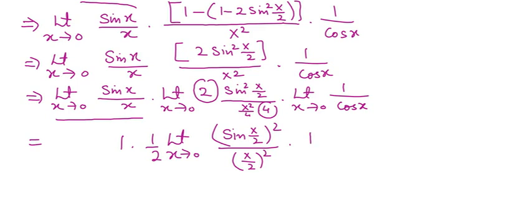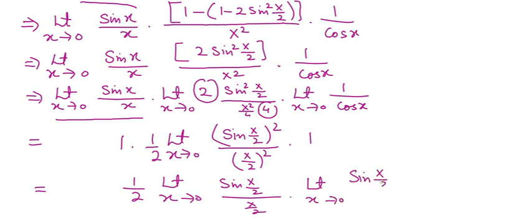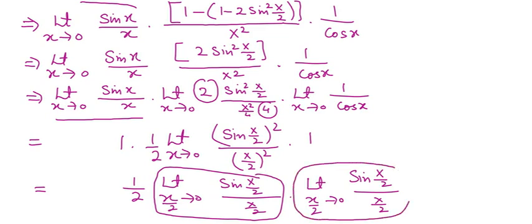So this is 1/2 times limit x tends to 0 of sin(x/2) upon (x/2), times limit x tends to 0 of sin(x/2) upon (x/2). The value of each of these terms equals 1. So you get 1/2 times 1 times 1. The final result is 1/2.